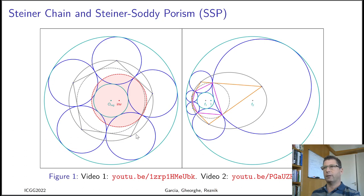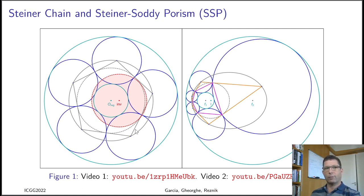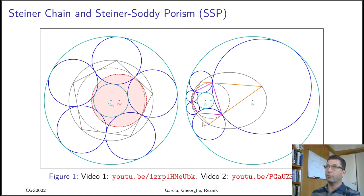If you consider a regular n-gon — in this case n equals 5 — and associate with each vertex a circle whose radius is half the side length, by symmetry you can glide, slide, or rotate this entire ball-bearing arrangement keeping all tangencies preserved. If you then choose an inversion circle (this red circle here) and consider the image of this rotating setup under the inversion, you get an asymmetric image where tangencies are still preserved.